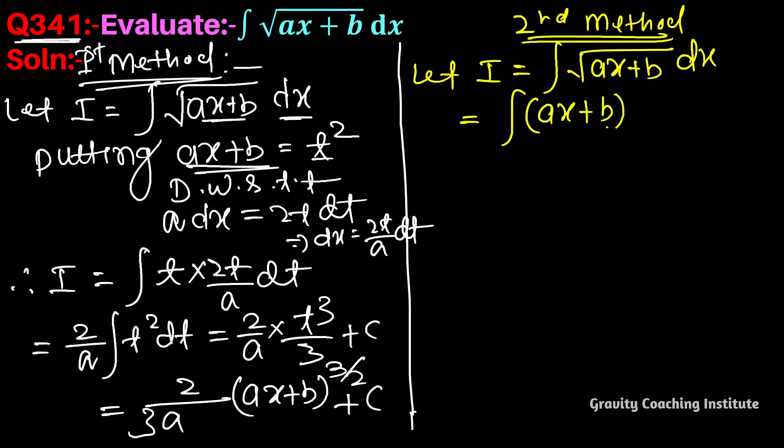We can write (ax+b)^(1/2) dx as (ax+b)^(1/2+1) divided by (1/2+1), over the coefficient of x which is a.